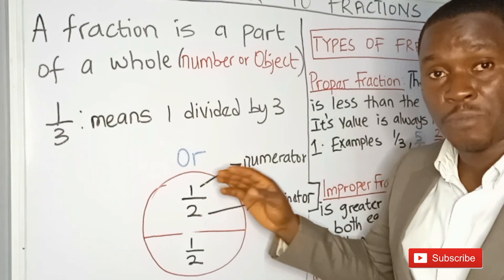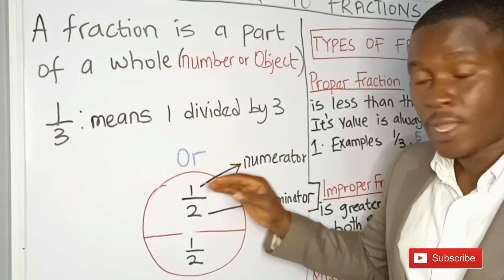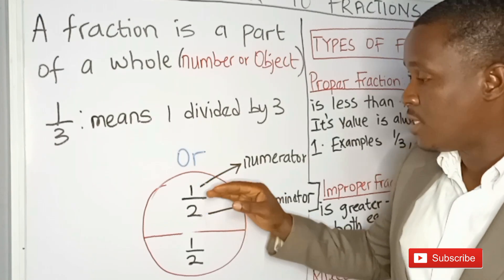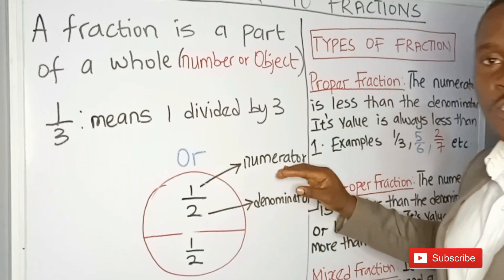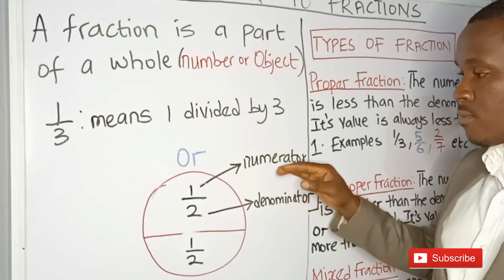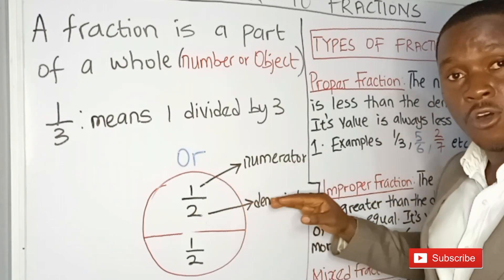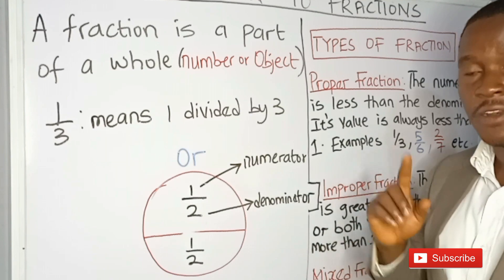A fraction is divided into two parts. The number at the top and the number at the bottom. The number at the top is called the numerator. The number at the bottom is called the denominator. Very important to notice.